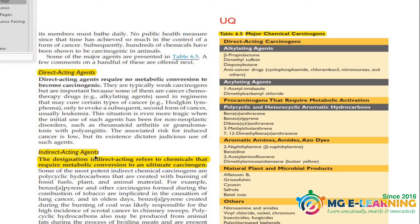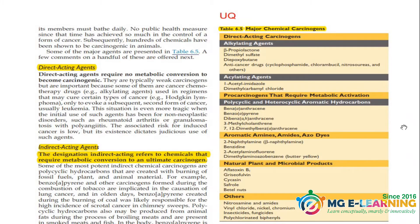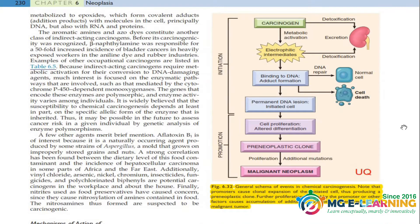Direct acting agents — give these a good read, this topic is not to be skipped. Direct acting agents are also called ultimate carcinogens. This is an important topic.